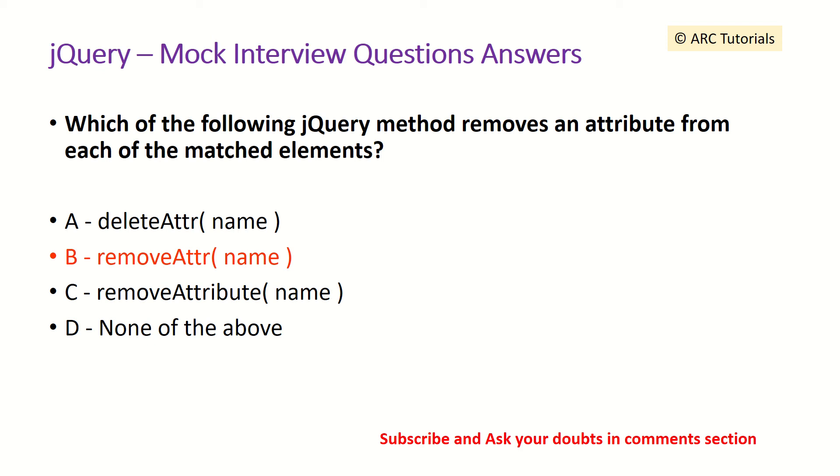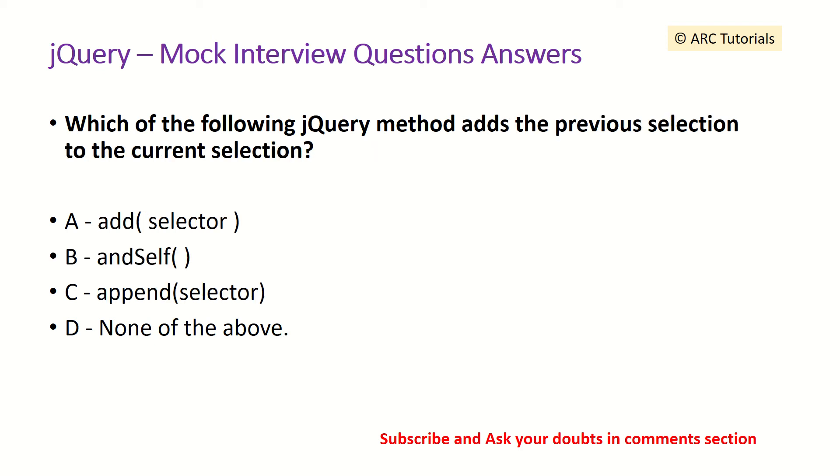Which of the following jQuery method adds the previous selection to current selection? So this is a tricky one, so read through again. Your options are add, andSelf, append, none of the above.